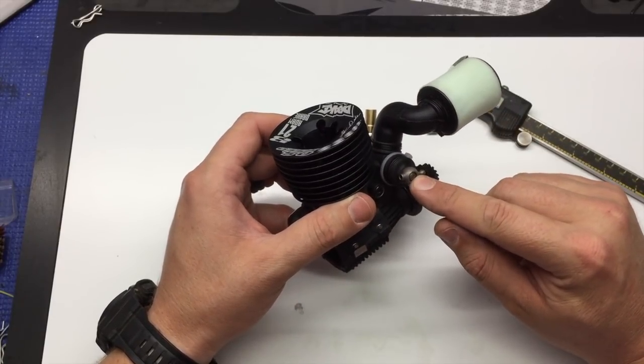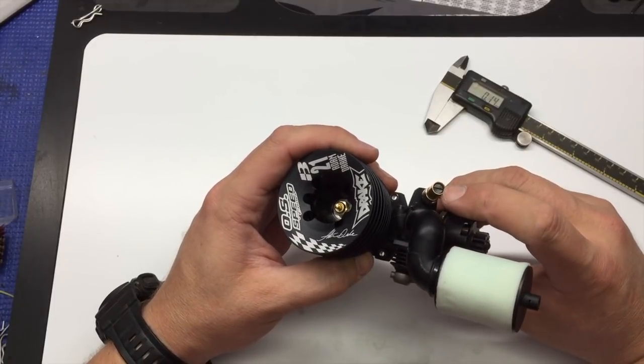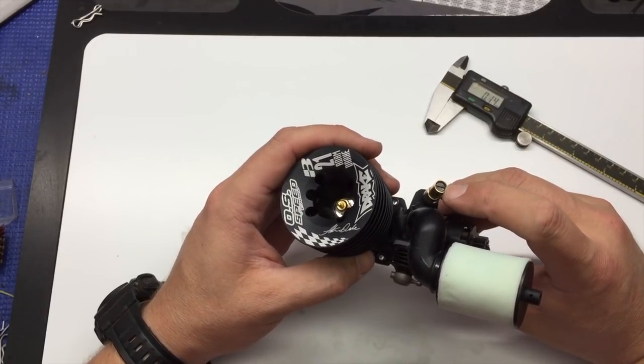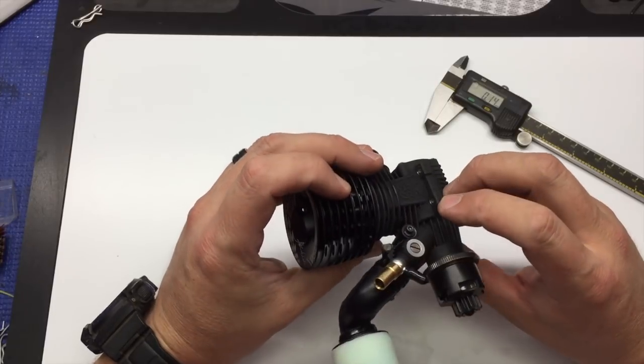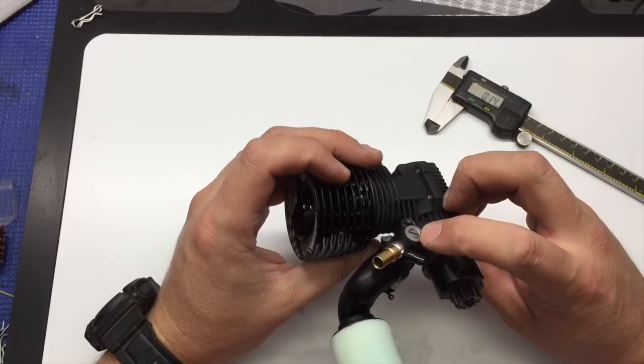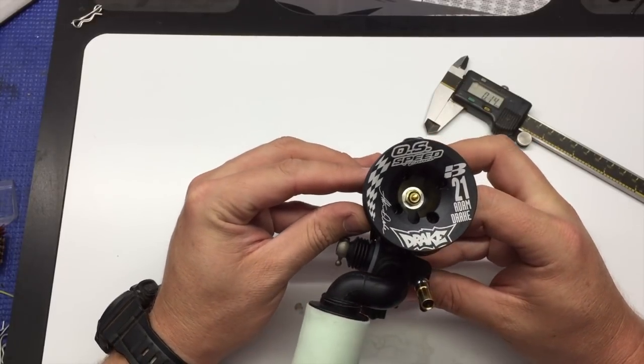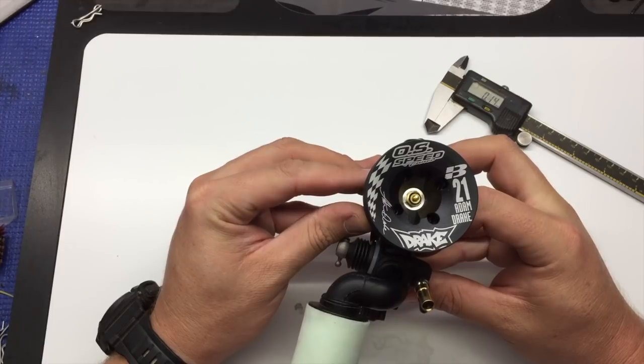Mid-speed, half a millimeter in from flush. High speed, 1.4 to 1.5 millimeters in from flush. And the mid-speed usually ends up being between .1 and .15 in from flush for the OS Speed B21 Adam Drake engine.